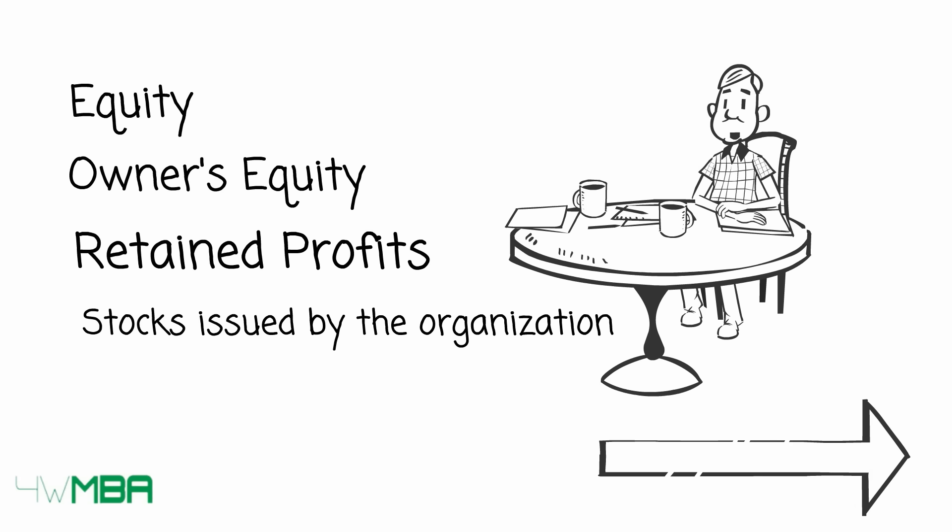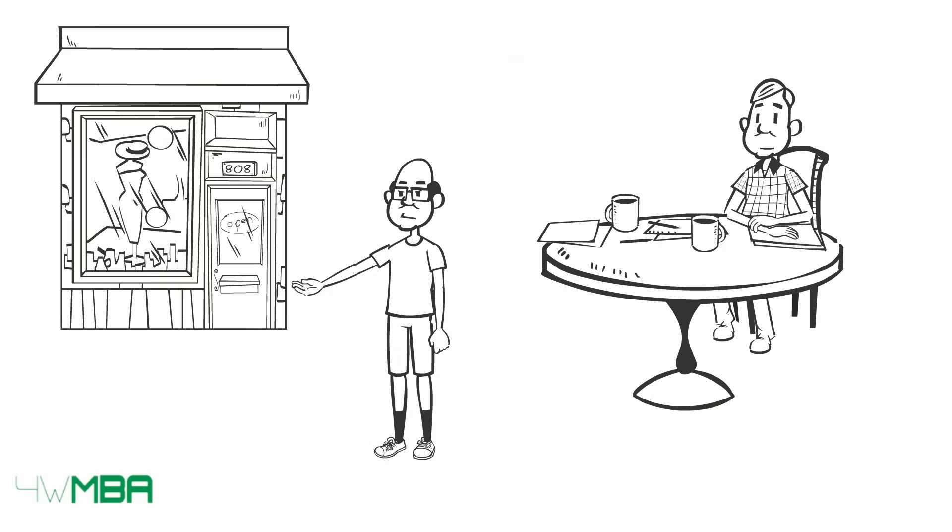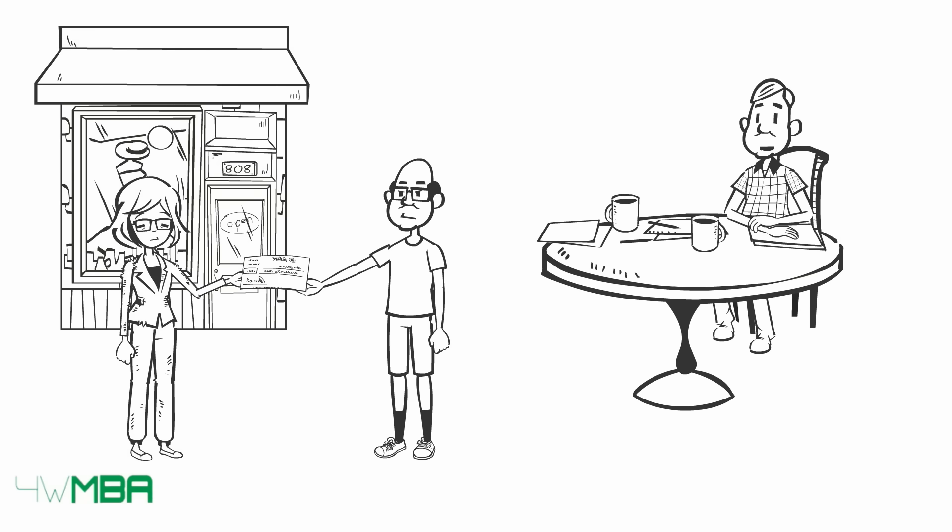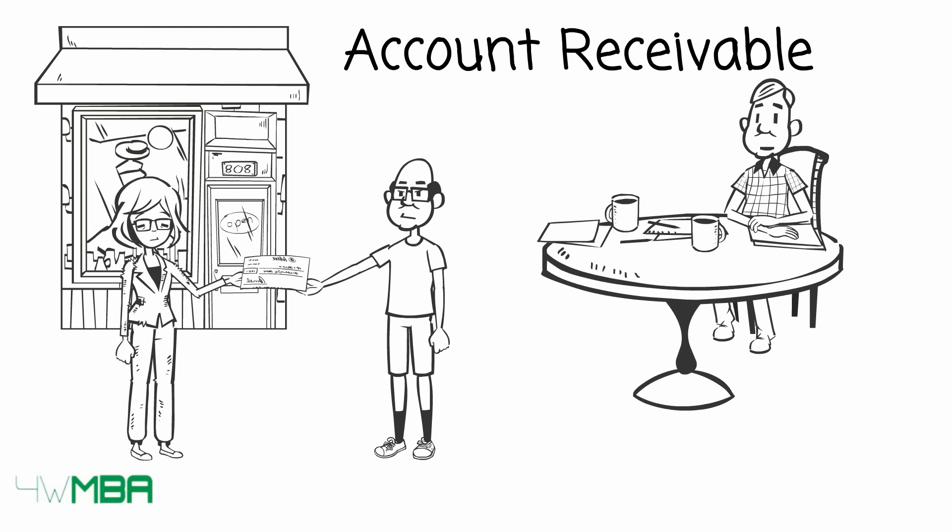Let's see now a few examples. Jim sold 100 dollars worth of clothes. His customer Janet paid with credit card. Therefore, this will generate an account receivable for 100 dollars on Jim's balance sheet.